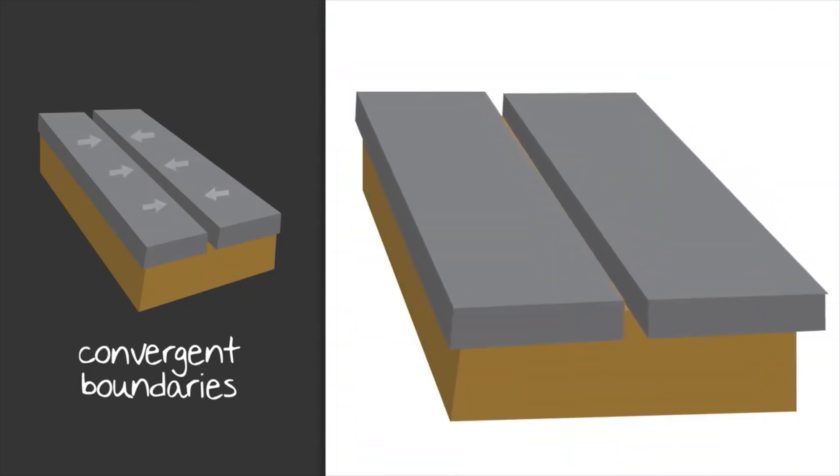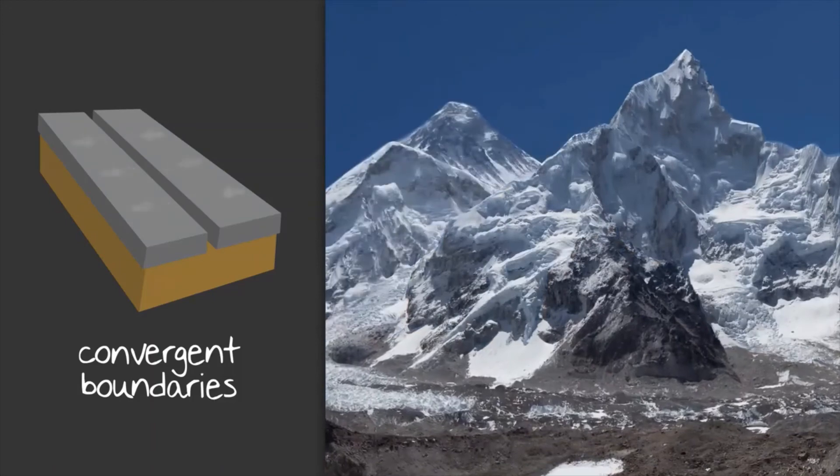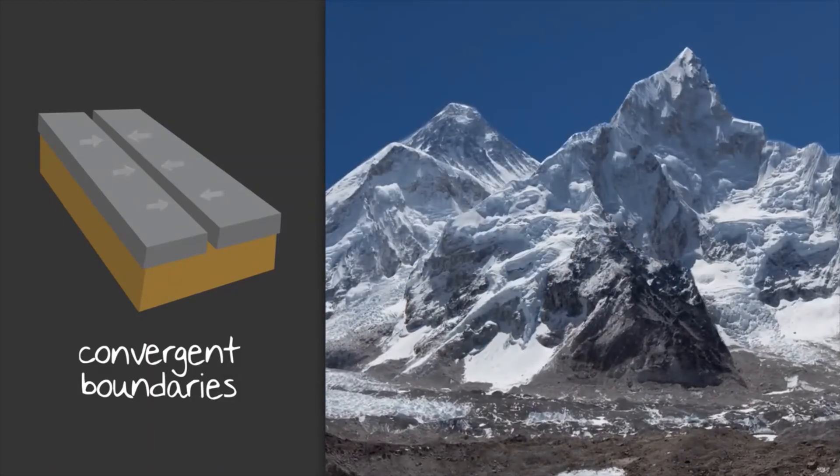The other thing that can happen when two plates press into one another at a convergent boundary is the rock above the boundary will be lifted up or folded and form mountains. Ever hear of the Himalayas? That's an example of two tectonic plates colliding.